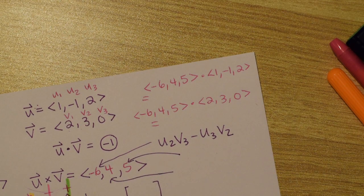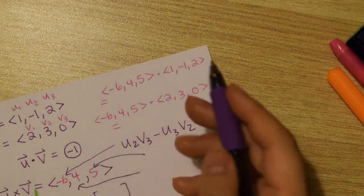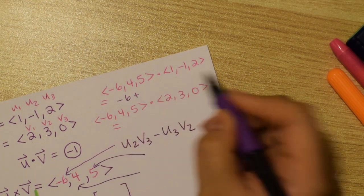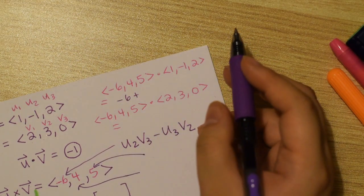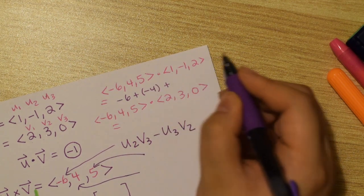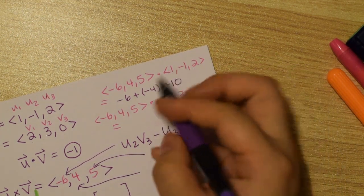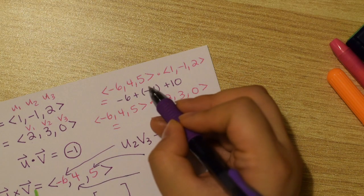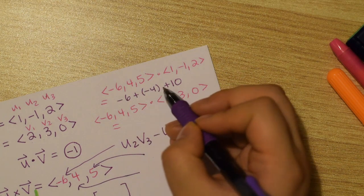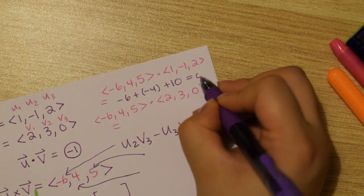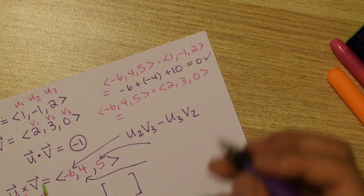So we'll just calculate it quickly here. Negative 6 times 1 is negative 6, plus 4 times negative 1 is negative 4, plus 5 times 2 is 10. So negative 6, and then the plus minus is minus 4. So negative 6 minus 4 is negative 10, plus 10 is zero. Cute. So that works. So our answer is perpendicular to u.